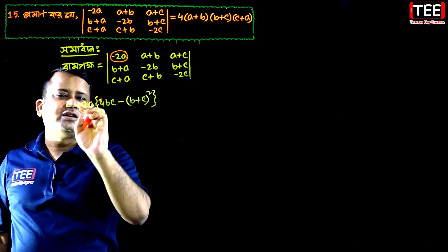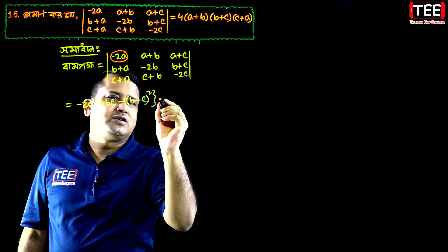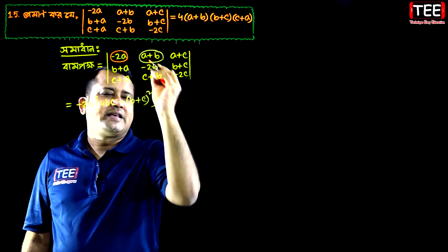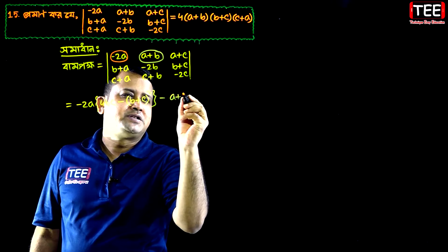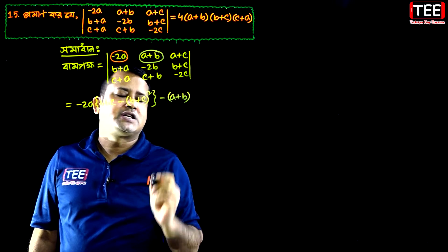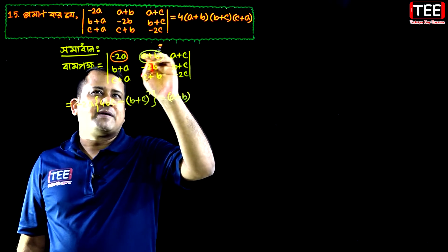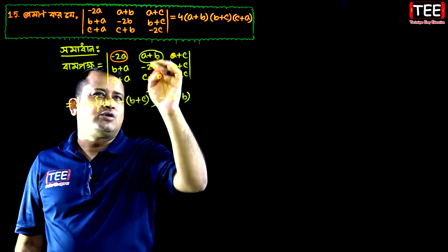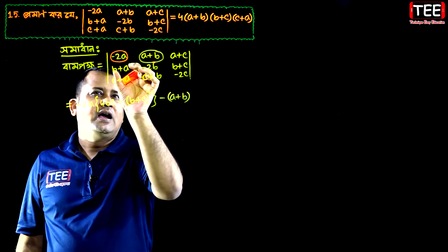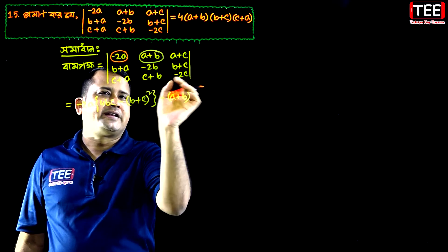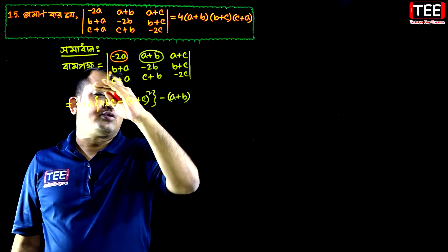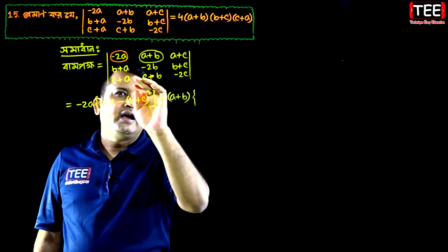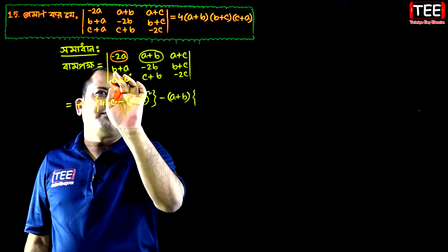We want to make d minus 2a plus b, where b plus b is minus 1. It will be plus 0, so the first column will be equal to 0.